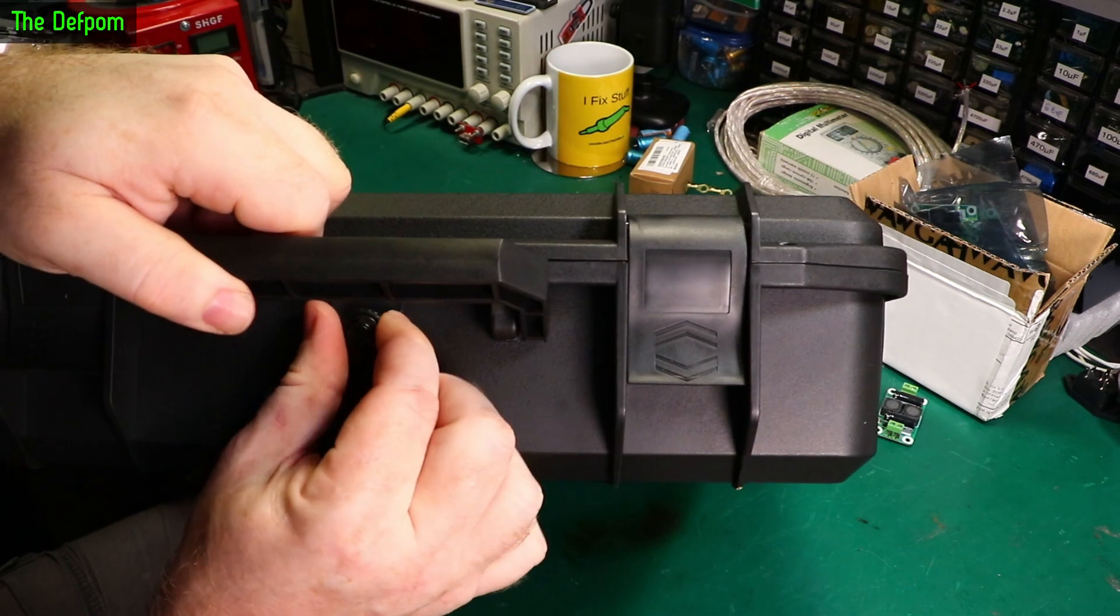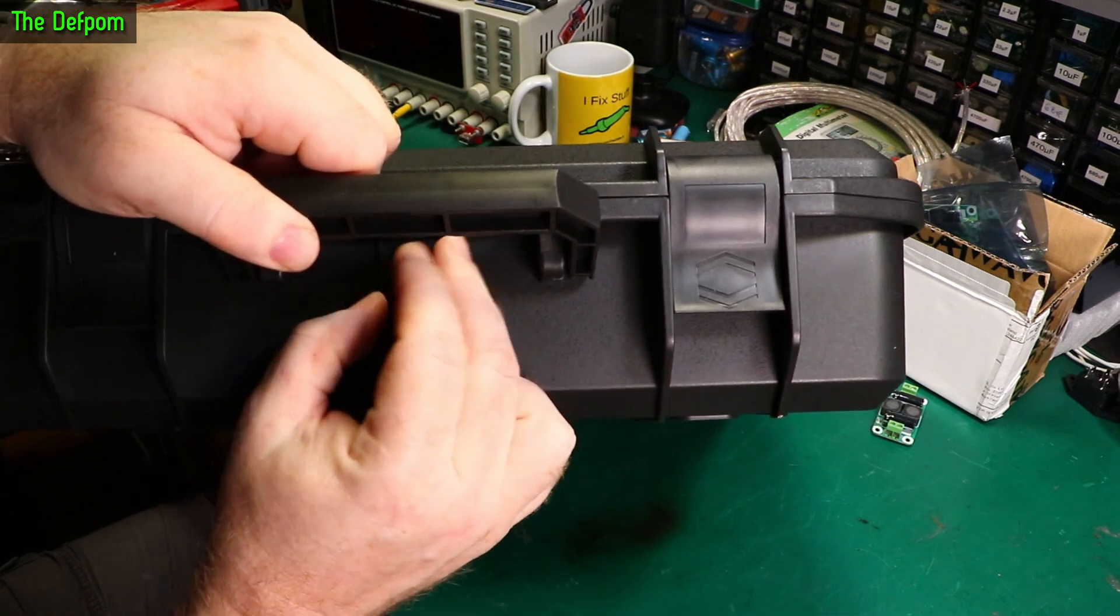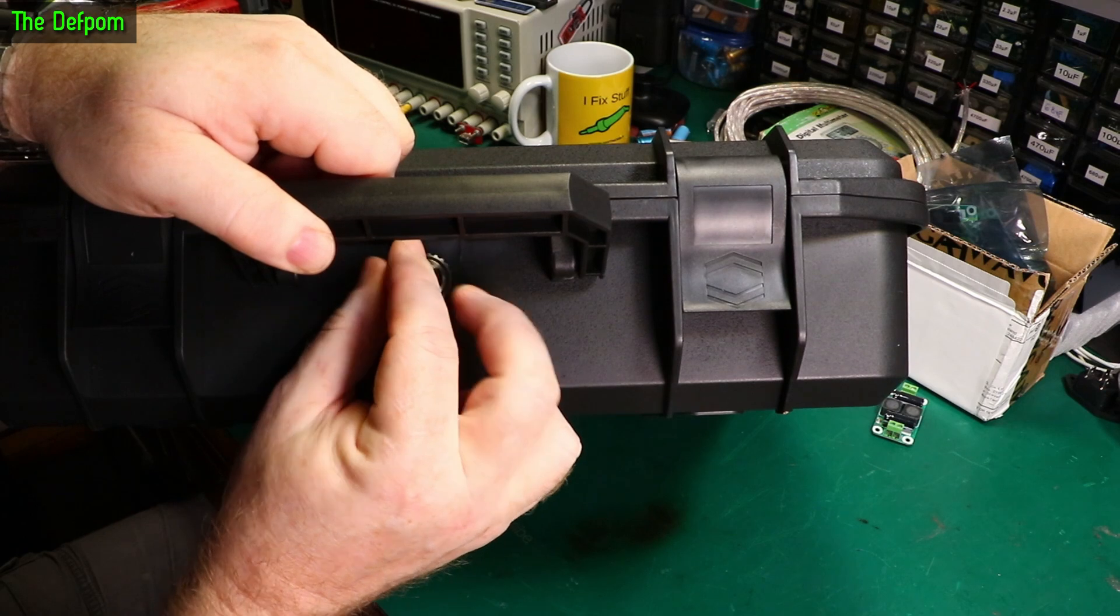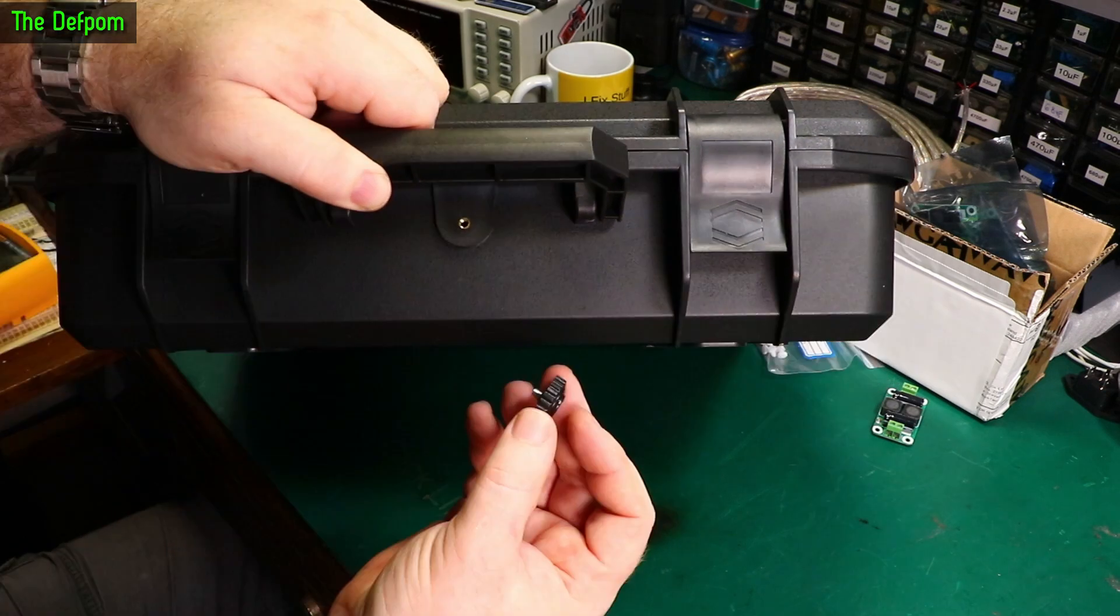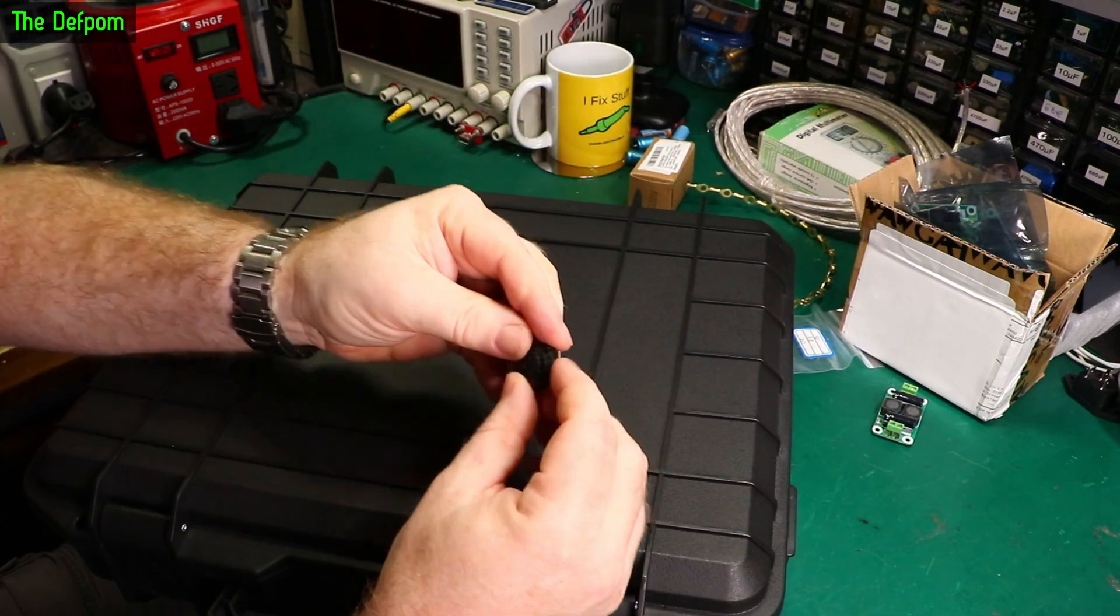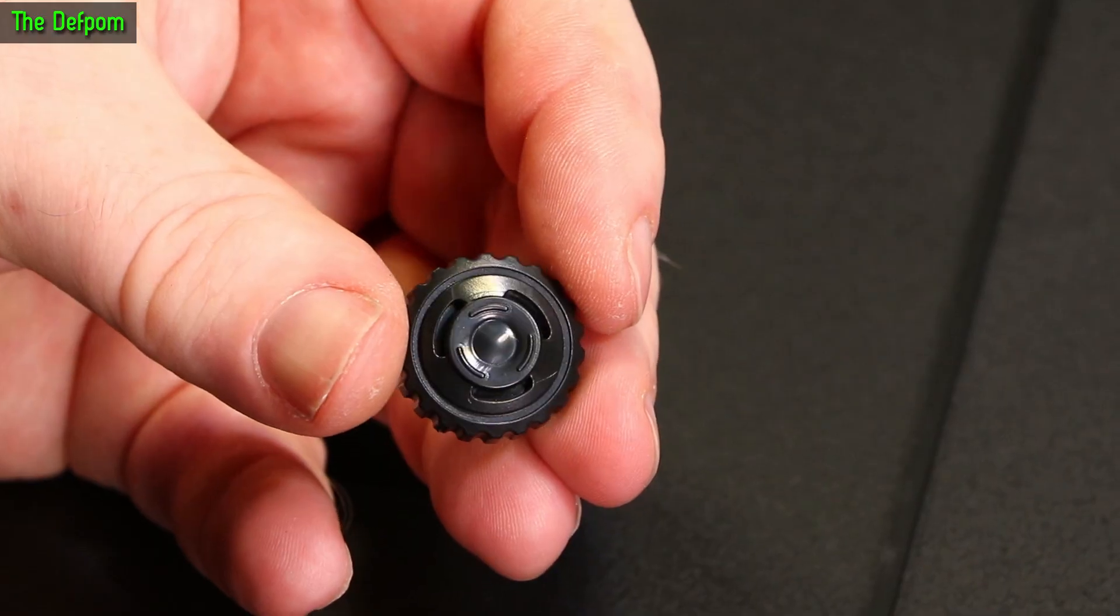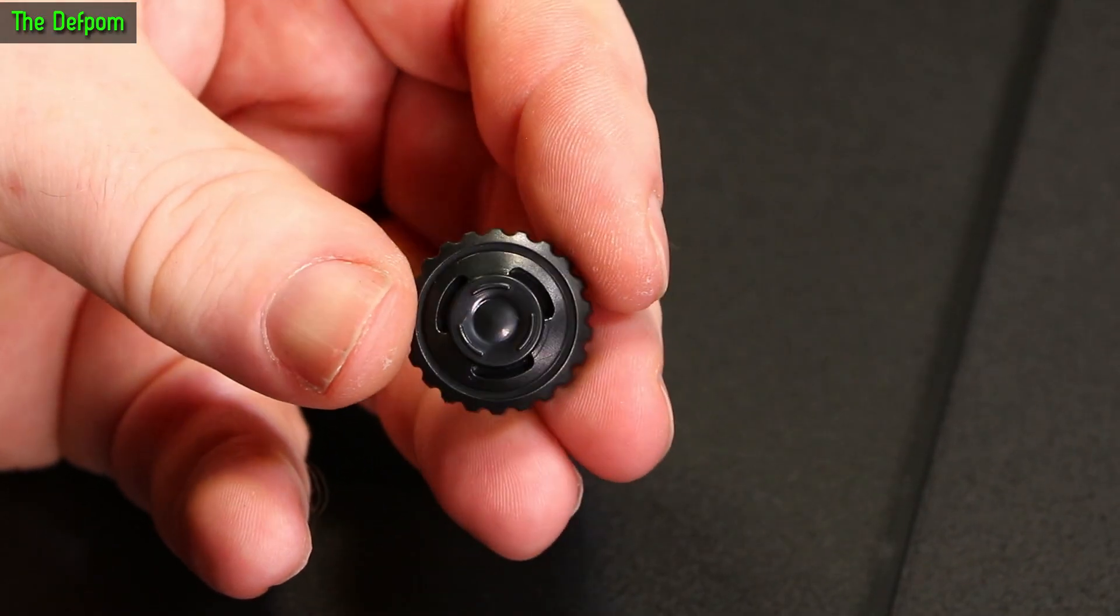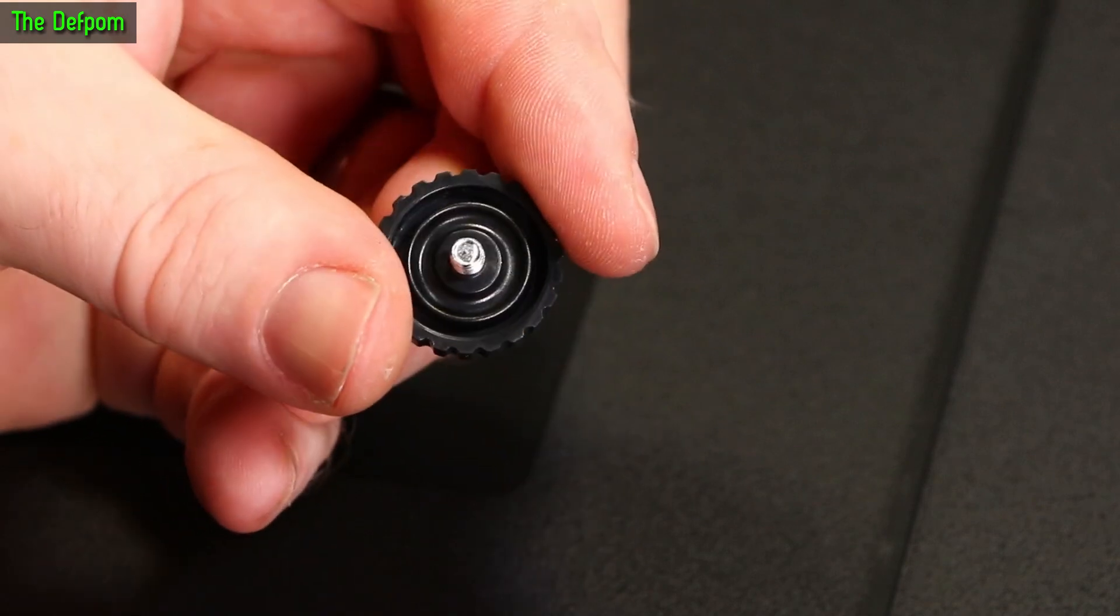And it's got this thing here. I have no idea what that's for. Is that a vent? It's not a vent. What is this thing? That's what it looks like on the front. Looks a bit like a vent.